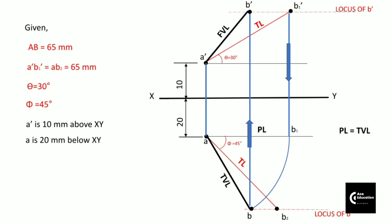So guys, this is one kind of problem in projection of lines when the line is inclined to both the planes and its inclination with horizontal plane and vertical plane — that is theta and phi — are given. This way we can solve projection of line problems involving a line inclined to both planes. We will try to cover more problems on projection of lines, so keep practicing. Thanks for watching.